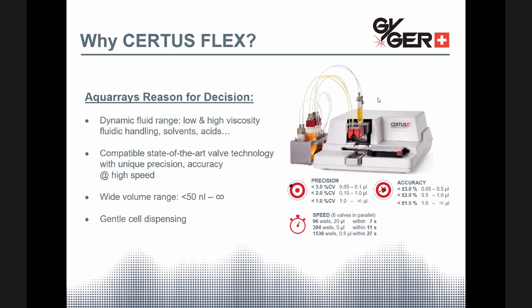Second, the flexible state-of-the-art valve technology with the unique precision accuracy at high speed has shown to be very compatible for dispensing the specific pattern of their DMAs. Next, with a wide volume range which starts from smaller than 50 nanoliters and up to the desired volume, it covered the nanoliters range that AquaArray needed to dispense. And last but not least, they required obviously a device that was able to gently dispense cells. This I'd like to show you now presenting their data.